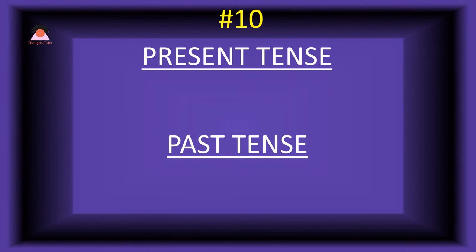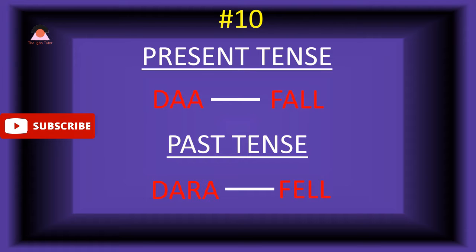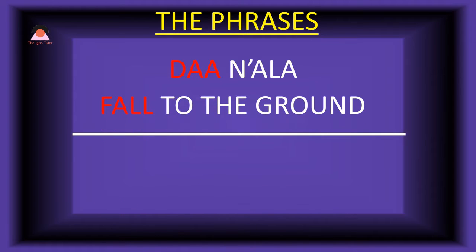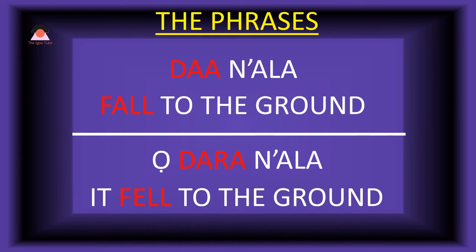Word number ten: 'da,' which means 'fall.' The past tense of da is 'dara,' meaning 'fell.' Present tense phrase: 'da-na-ala,' which means 'fall to the ground.' Past tense: 'odara-na-ala' — it fell to the ground.